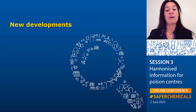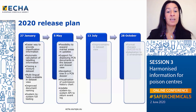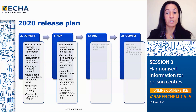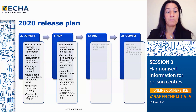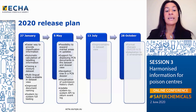Let's move now to the new developments of the Poison Centers IT solution that has been recently released. The Poison Centers IT solution was released for the first time in April 2019. Since then, there have been several additional releases aimed at improving the tools to prepare and submit Poison Centers notifications. In 2020, two releases already took place, one in January and one in May. In this last release, several improvements have been implemented to ease the preparation of dossiers and to enhance their submission, either via the ECHA submission portal or using the system-to-system service. A list of the main features made available in 2020 is displayed on the slide.